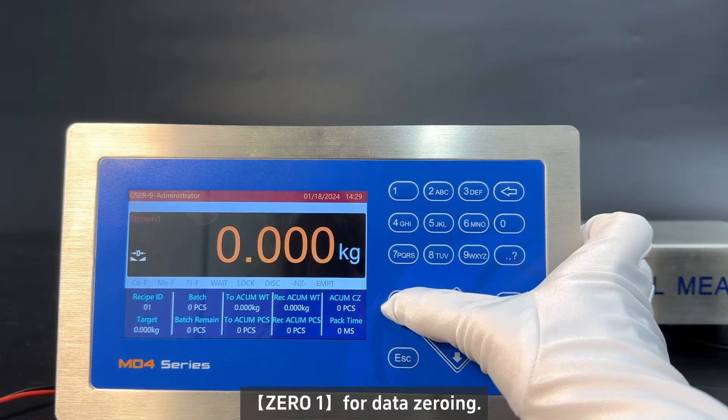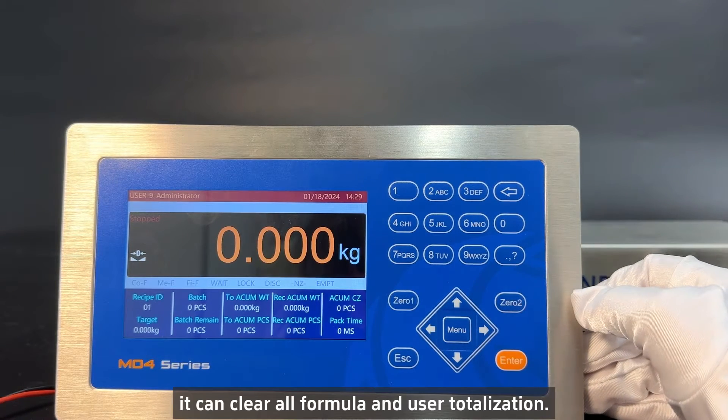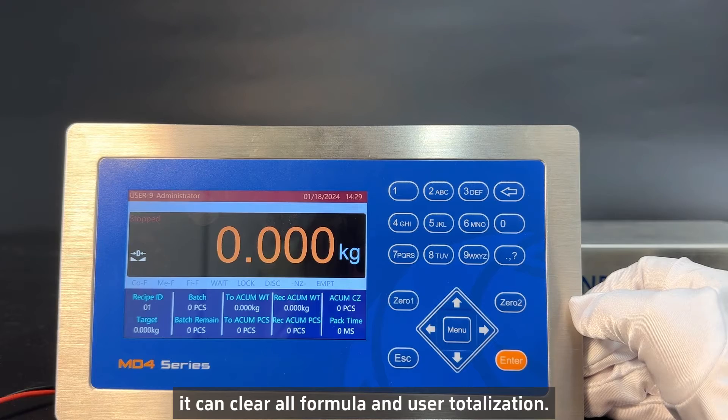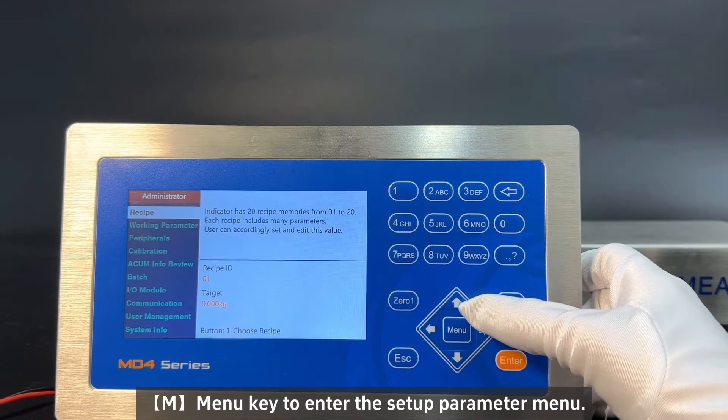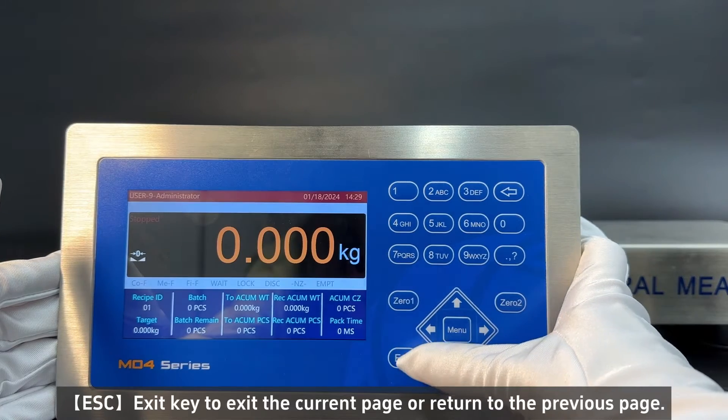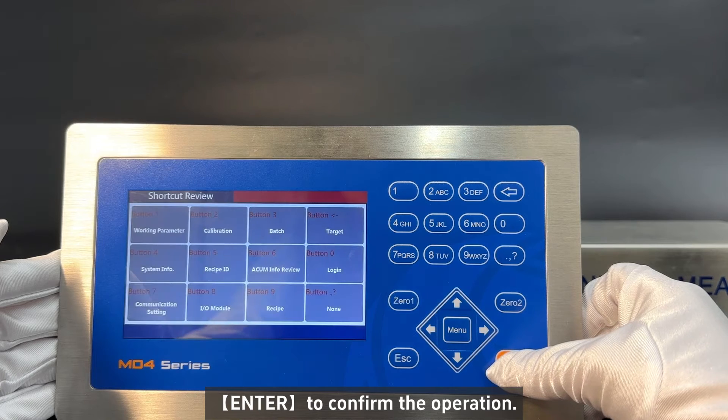01 for data zeroing, 02 in the totalization interface can clear all formula and user totalization. M-menu key to enter the setup parameter menu. ESC exit key to exit the current page or return to the previous page. Enter to confirm the operation.